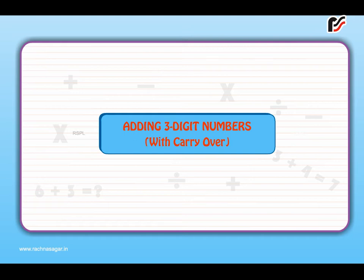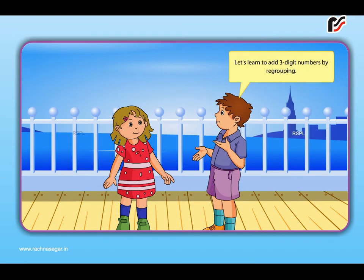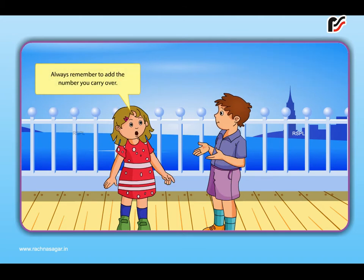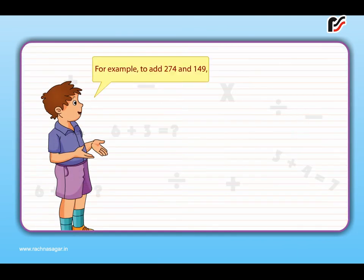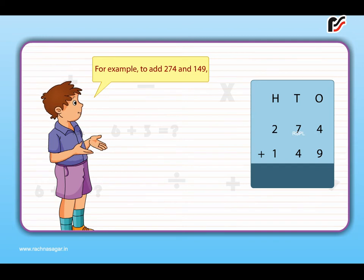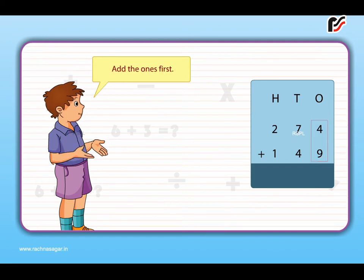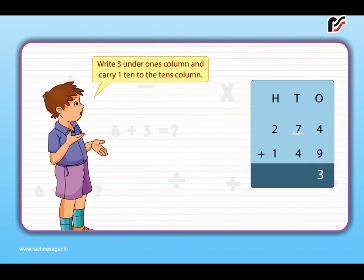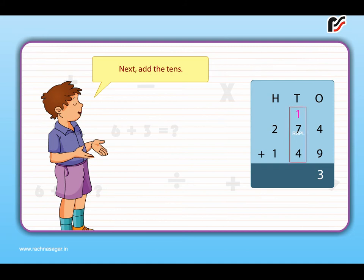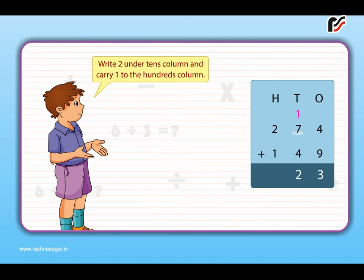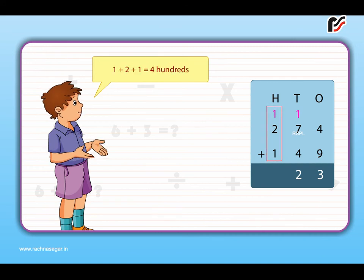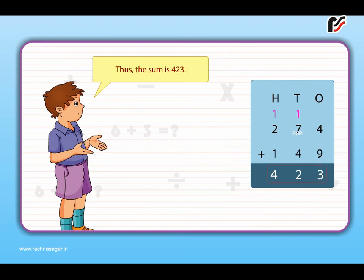Adding 3-digit numbers with carryover. Let's learn to add 3-digit numbers by regrouping. Always remember to add the number you carry over. For example, to add 274 and 149: add the ones first — 4 plus 9 is equal to 13 ones. Write 3 under the ones column and carry 1 ten to the tens column. Next add the tens: 1 plus 7 plus 4 is equal to 12 tens. Write 2 under the tens column and carry 1 to the hundreds column. Finally add the hundreds: 1 plus 2 plus 1 is equal to 4 hundreds. Write 4 under the hundreds column. Thus, the sum is 423.